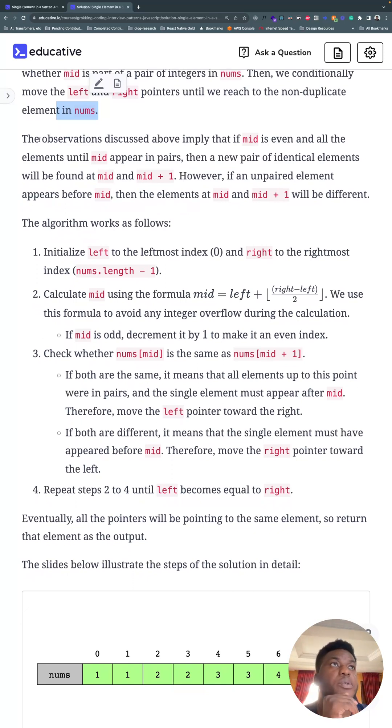Pardon me while I go to the wall of text. I'm going to get to the diagram that will explain everything we're going through, but I think it's worth stepping through. The observations discussed imply that if mid is even, all elements until mid appear in pairs, then a new pair of identical elements will be found at mid and mid plus one. However, if an unpaired element appears before mid, then the element at mid and mid plus one will be different.